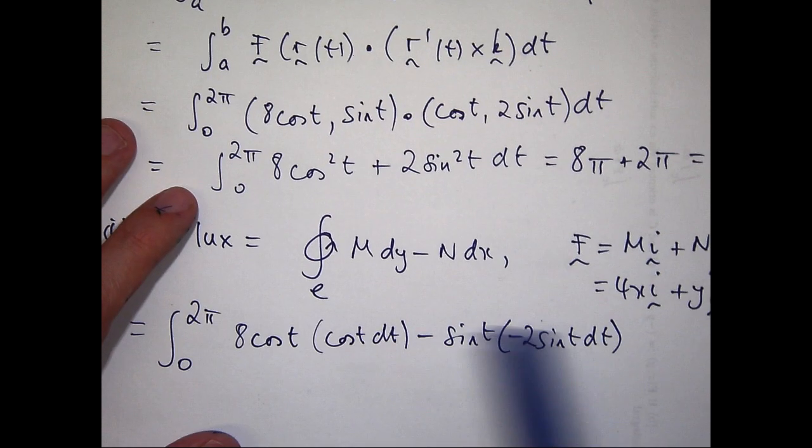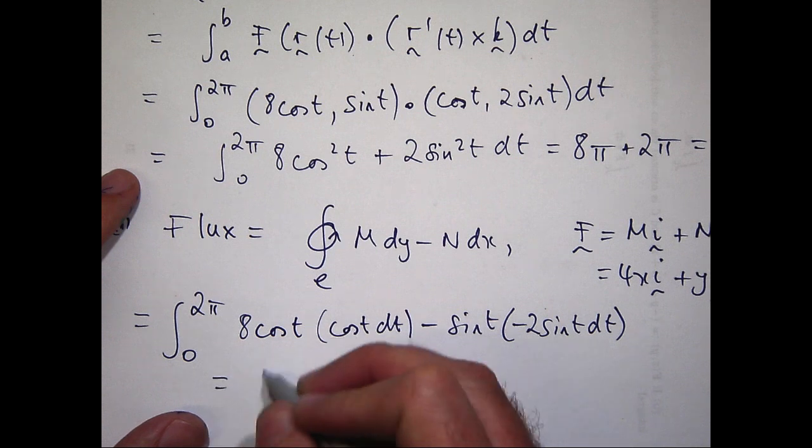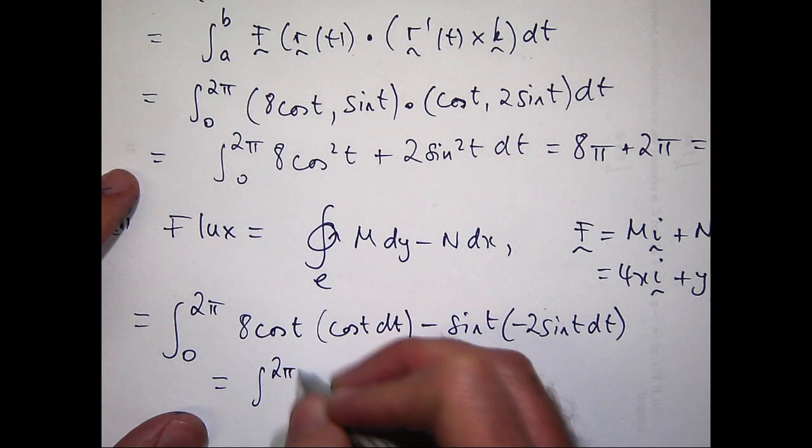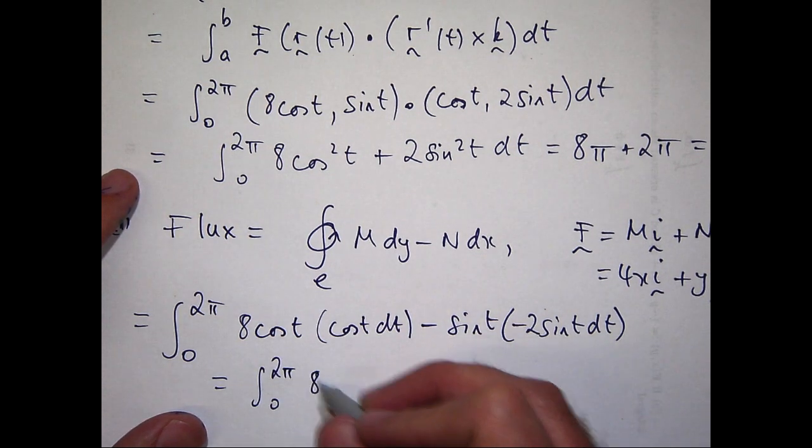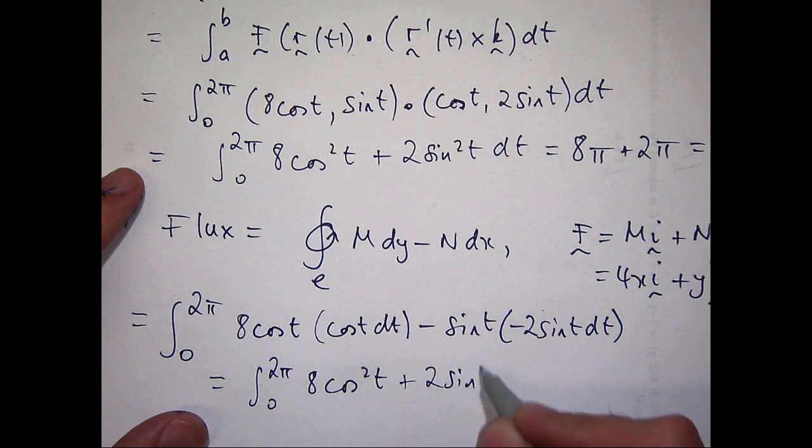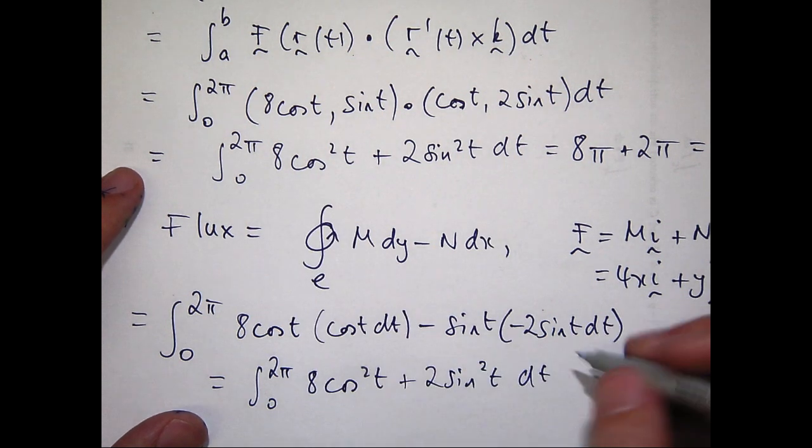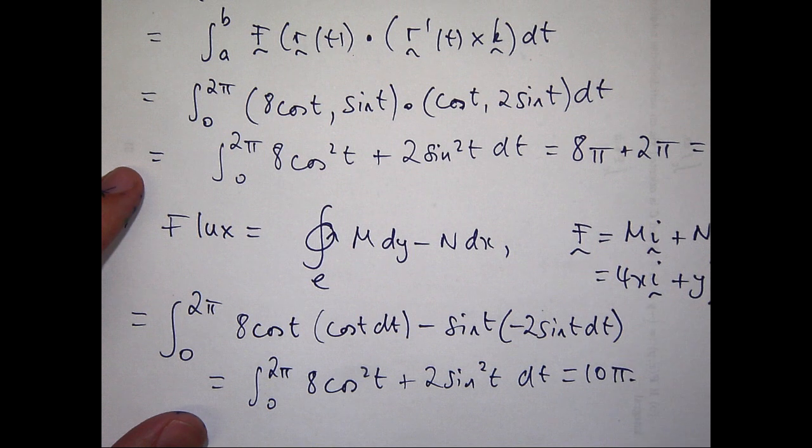So if I bring the dt's out to the right-hand side, you can see here hopefully that actually I've got 8 cos t squared plus 2 sin t squared. And that's exactly what we had up here. So we get the same answer.